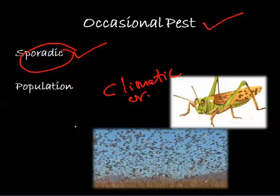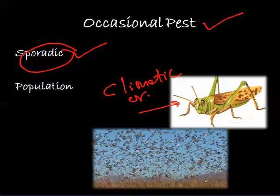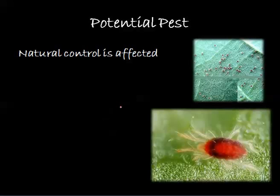There may be insects which are natural predators of this particular pest, but depletion of that natural control causes these pests to appear occasionally. Their population increases to a large extent, causing damage to mankind or its possessions. For example, locust is normally not seen in large populations, but occasionally due to changes in climatic conditions, they are seen in big swarms — as shown in the picture here.